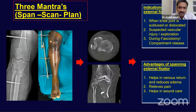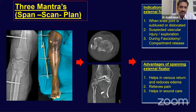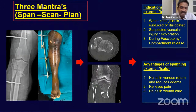Whenever you are dealing with joint subluxations or dislocations, suspected vascular injury, when plastics wants to explore, or when there is associated fascial compartment release, it is always ideal to use a joint-spanning fixator as a temporary measure. Once the swelling comes down and the soft tissue heals, you can think of definitive fixation.